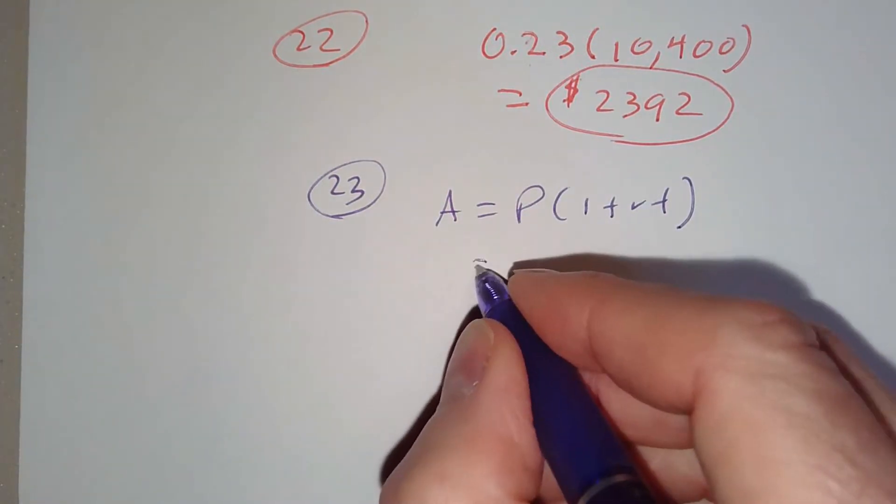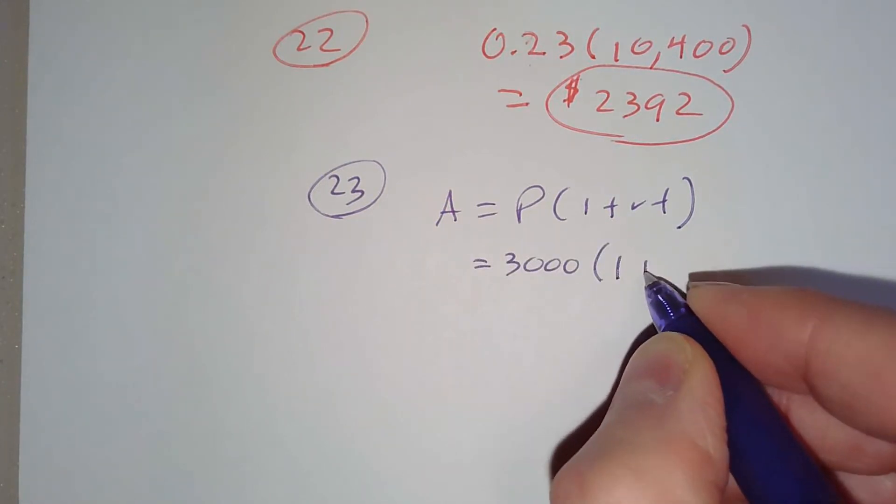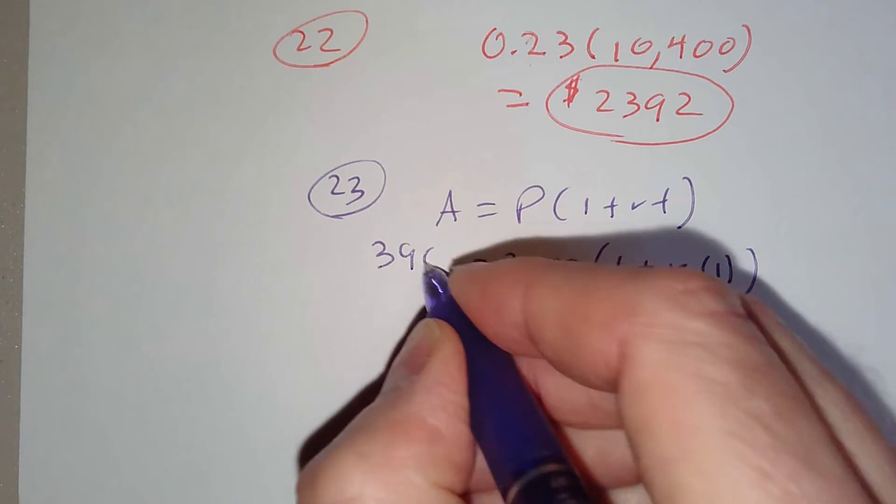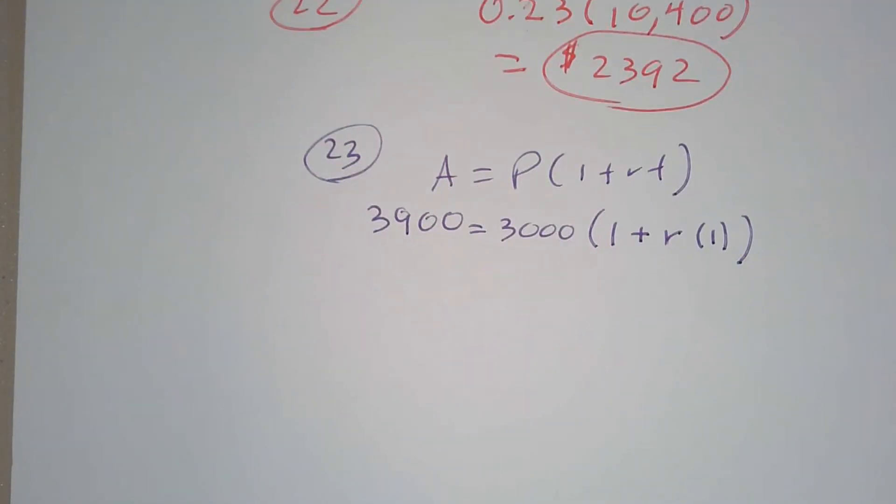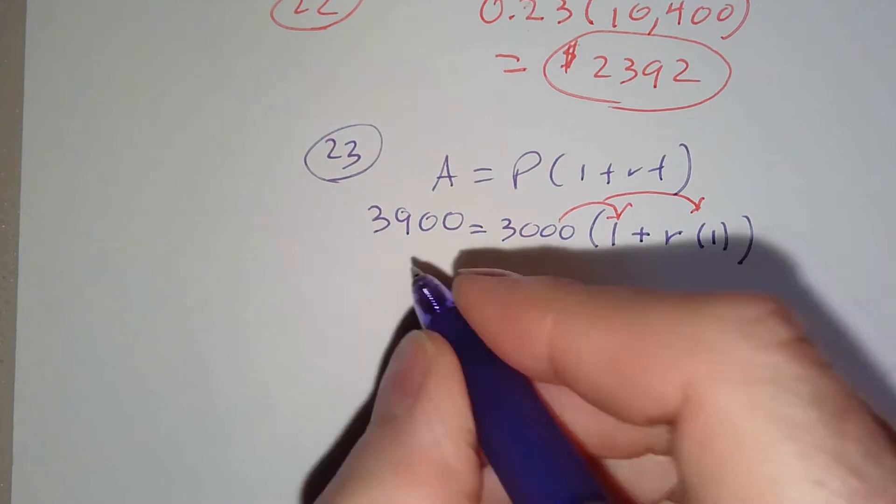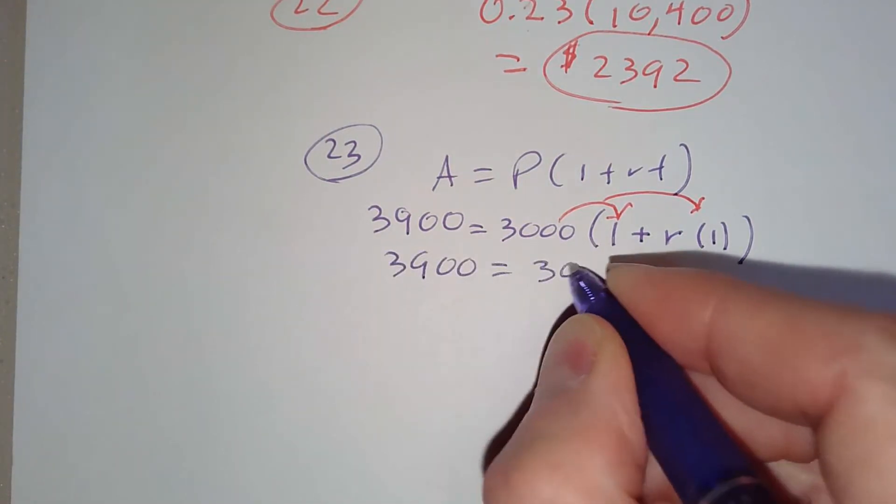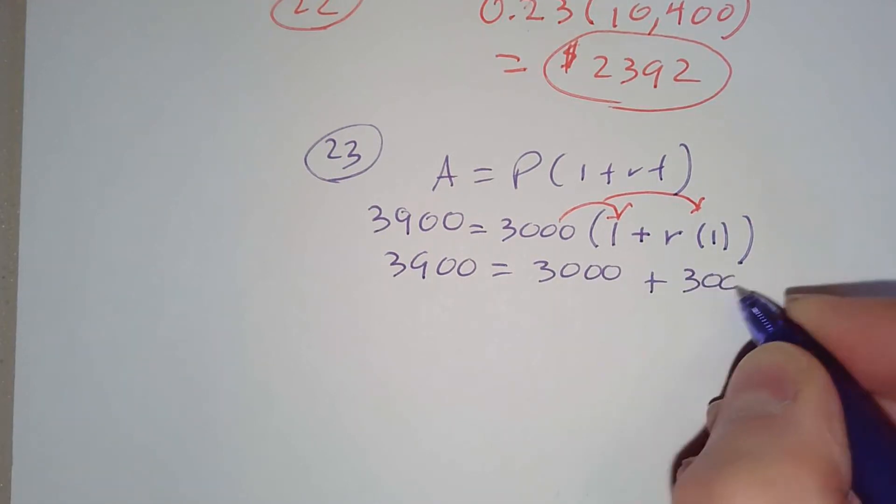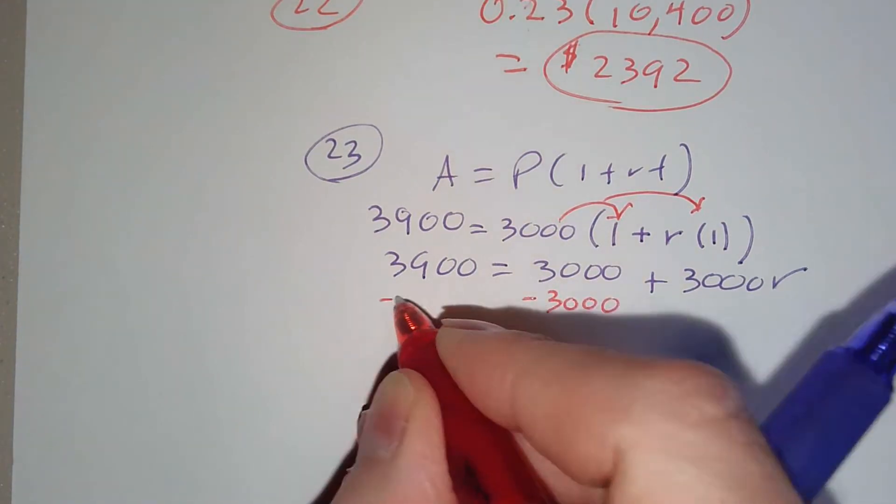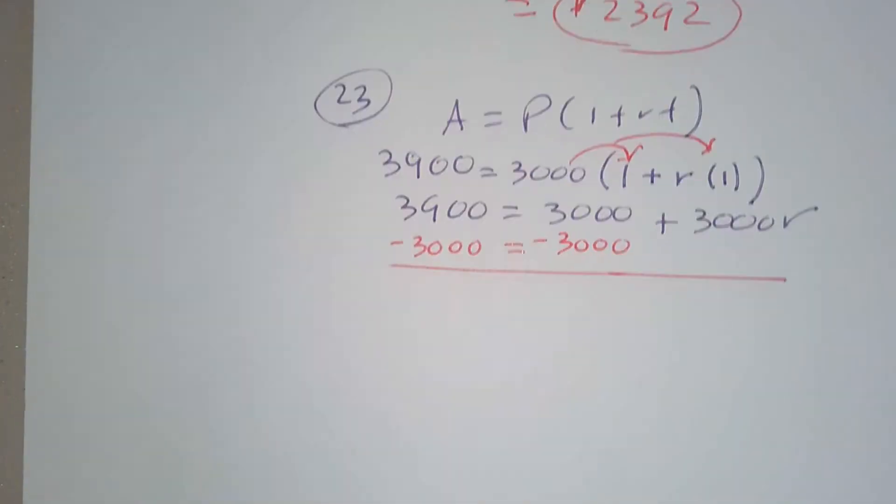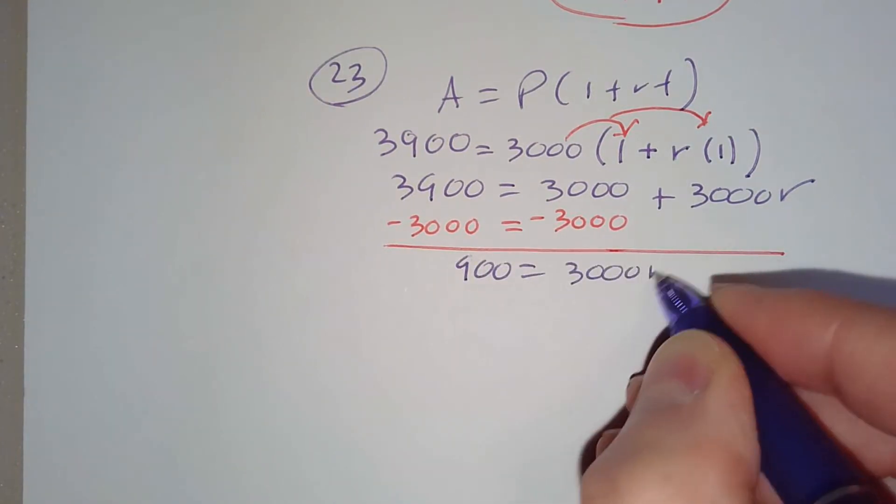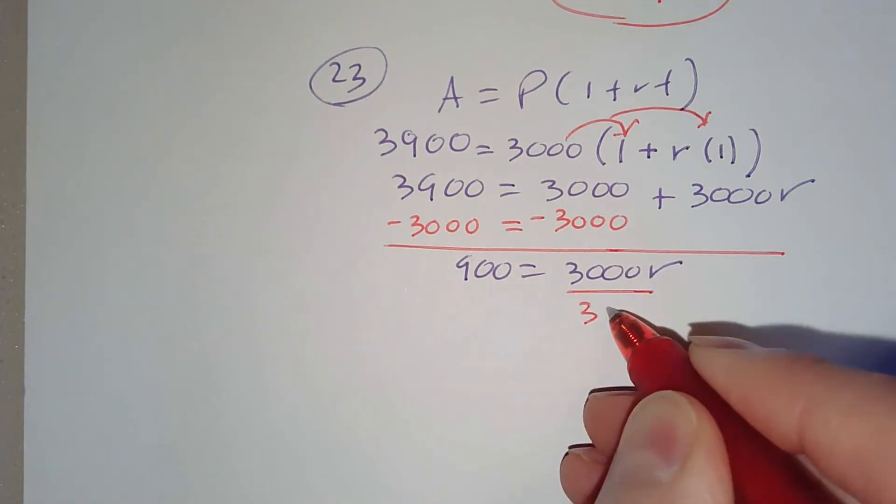So we know that principal here was $3,000. We don't know what R is—that's what we're trying to find. We know T here is one year, and what he paid back was $3,900. Let's go ahead and distribute. We're just going to treat this like a linear equation. So that gives us $3,900 equals $3,000 plus $3,000R. To solve this, we need to subtract $3,000 from both sides. That gives us $900 equals $3,000R.